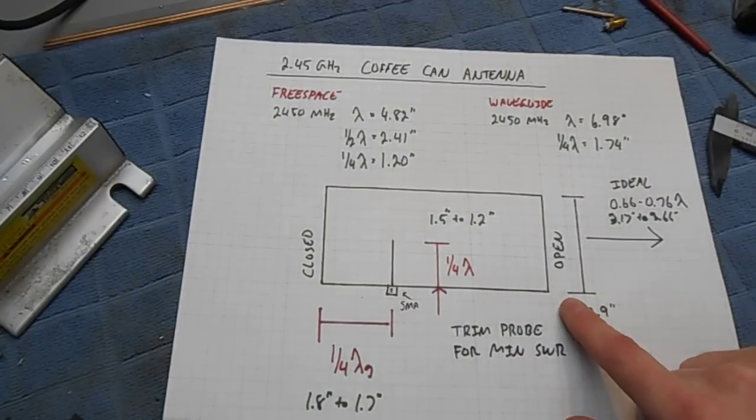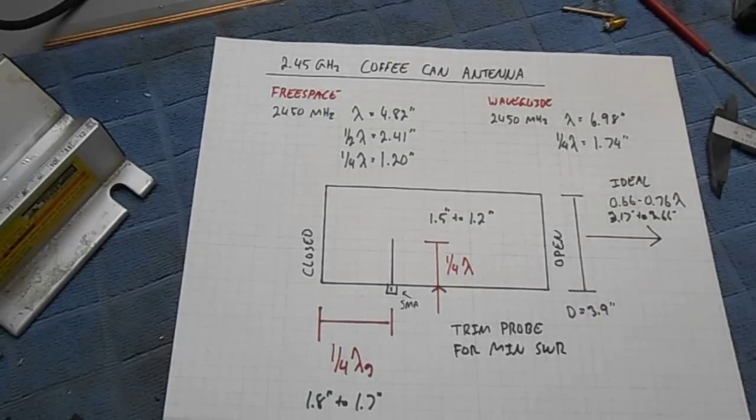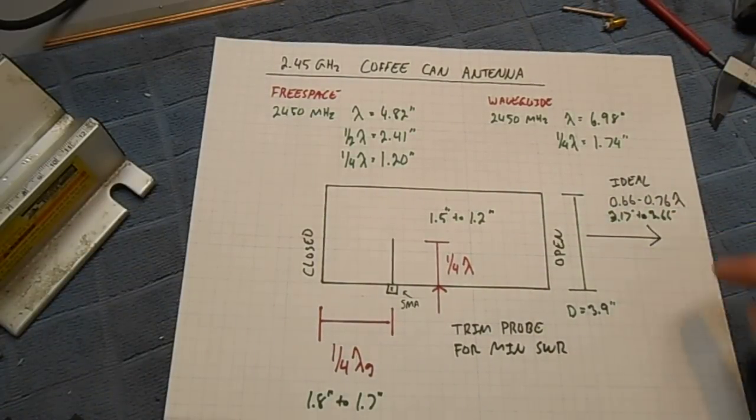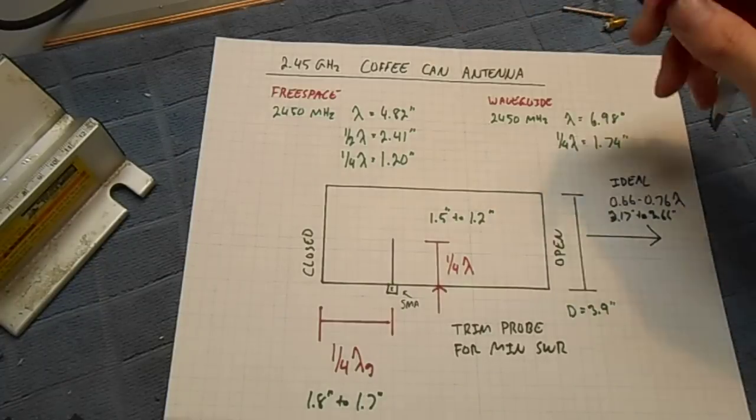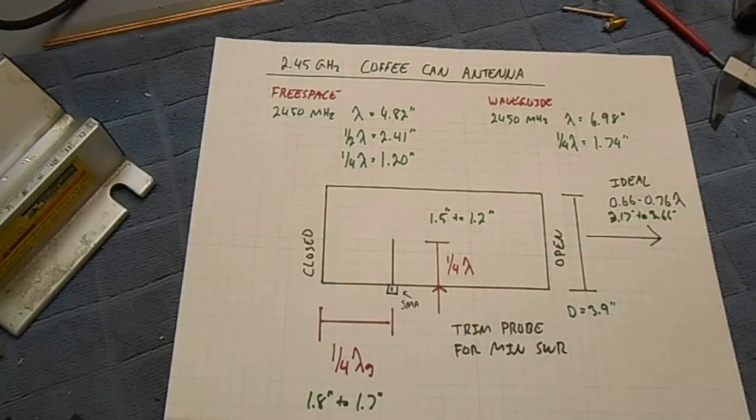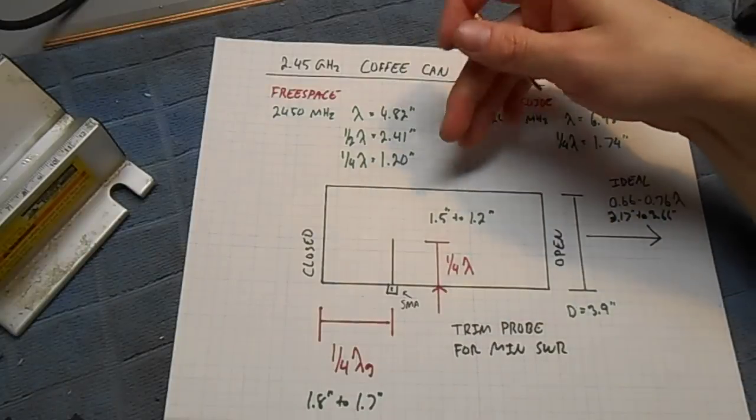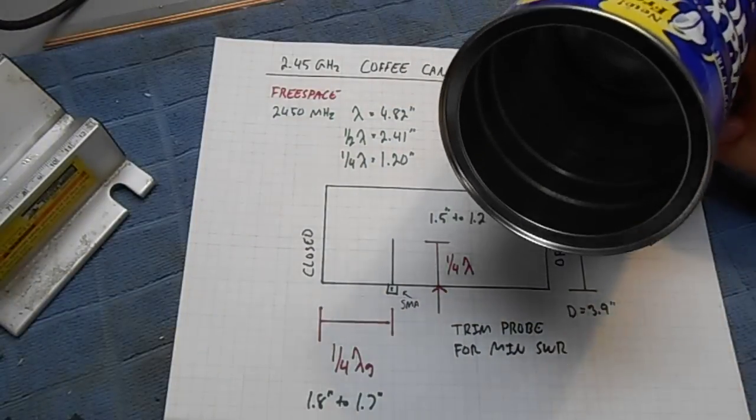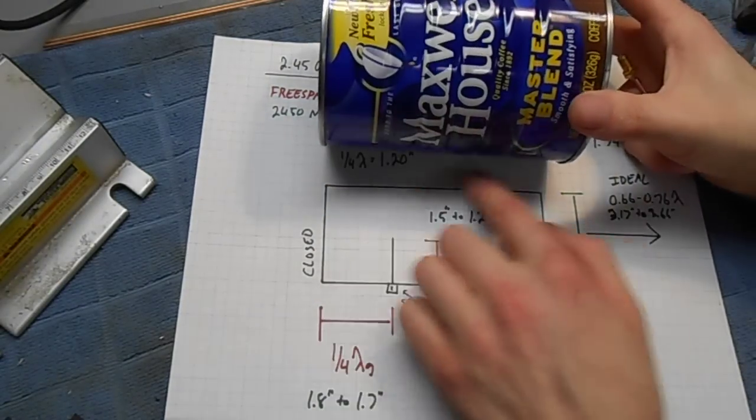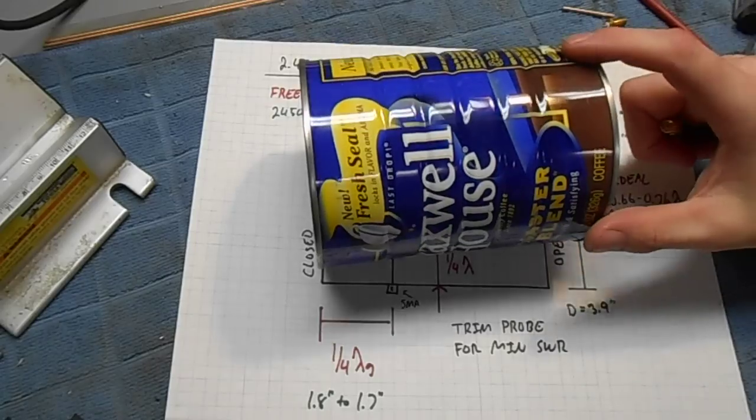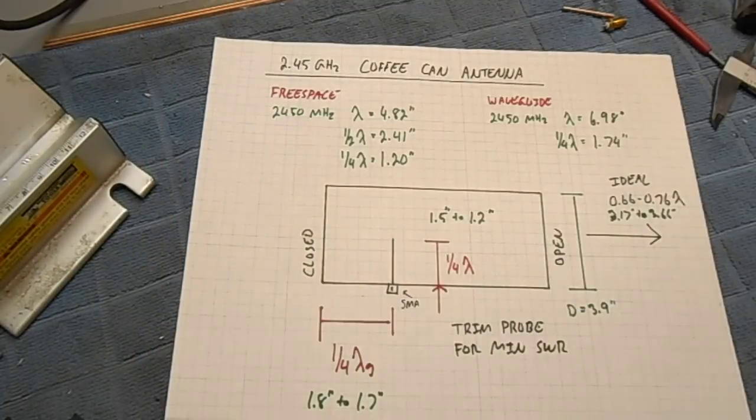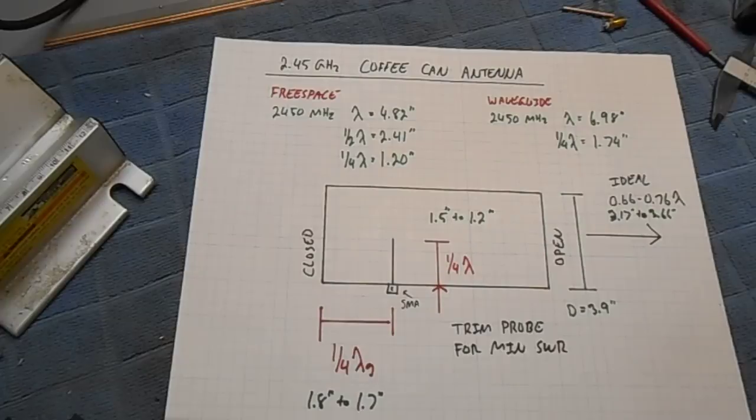Since the diameter of the waveguide is your critical dimension, you want to aim for something that's 0.66 to 0.76 your free space wavelength. So in reality, at 2.45 gigahertz, we wanted a can with an approximate opening of 3.17 to 3.66 inches. Our coffee cans are just a tad bit too big, but they do work. The overall length doesn't really matter. It does set the gain. A slightly longer can will give you a little bit more gain, but it doesn't really matter, especially for low-power applications that this will be used for.